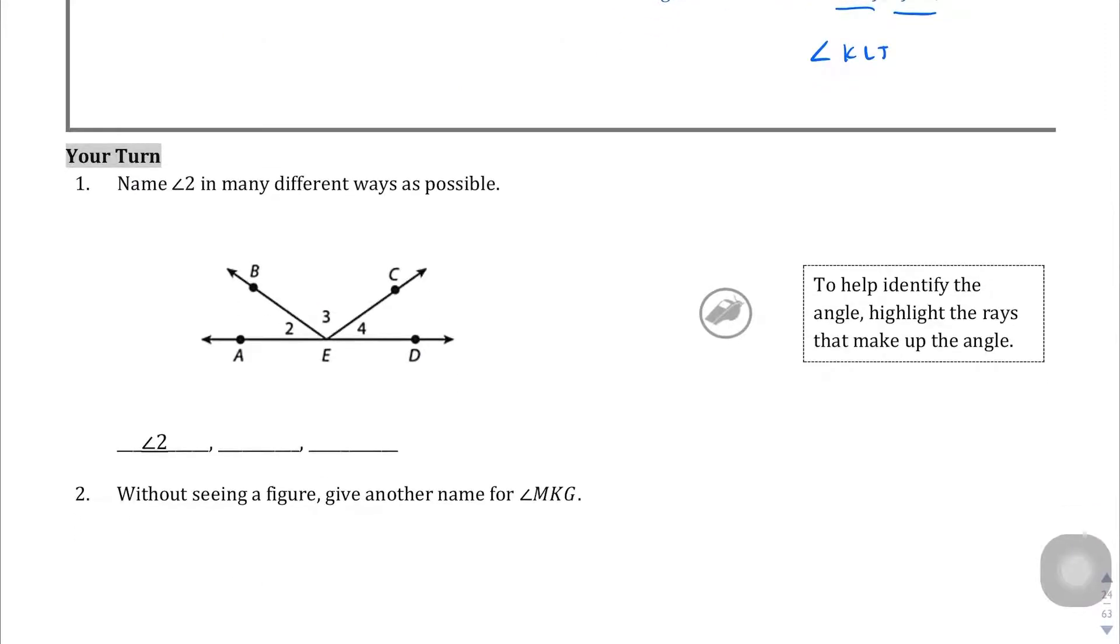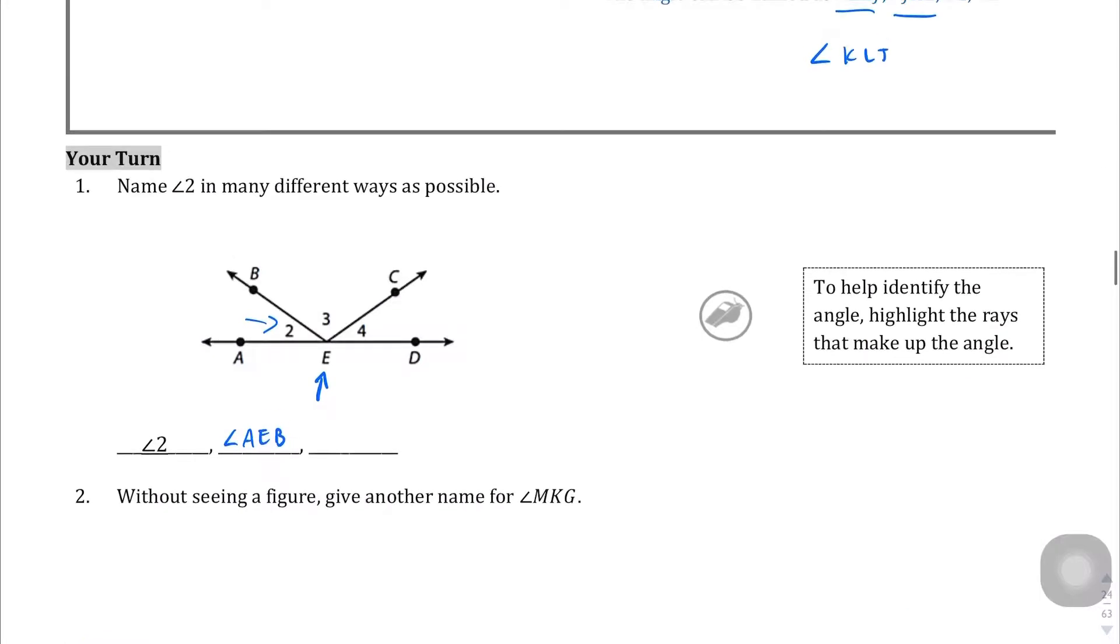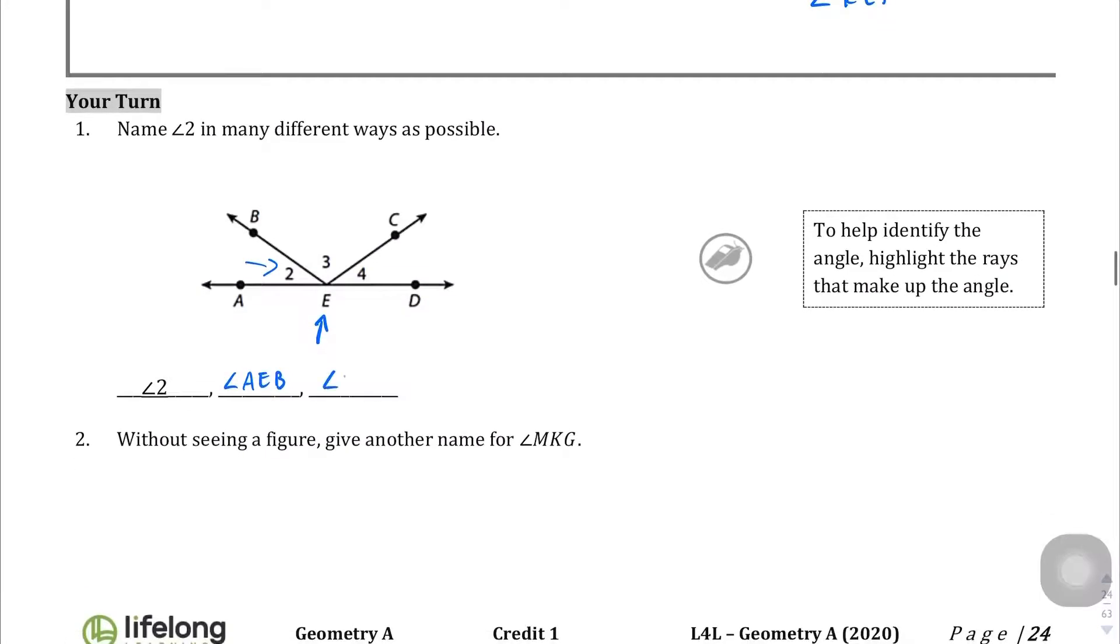Here on your turn, question number 1, name Angle 2 in as many different ways as possible. Obviously Angle 2, but you can also call this Angle AEB where E is the vertex, or you can also call this Angle BEA where E is still the vertex.